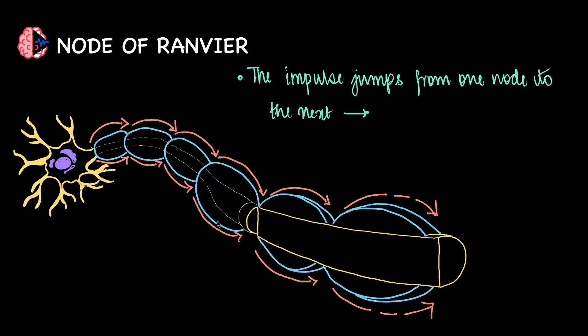Now why does this matter? This matters because signals in myelinated neurons travel much faster when compared to non-myelinated neurons where the impulse crawls and goes step by step. It's kind of like the difference between hopping across stones and wading through the water.